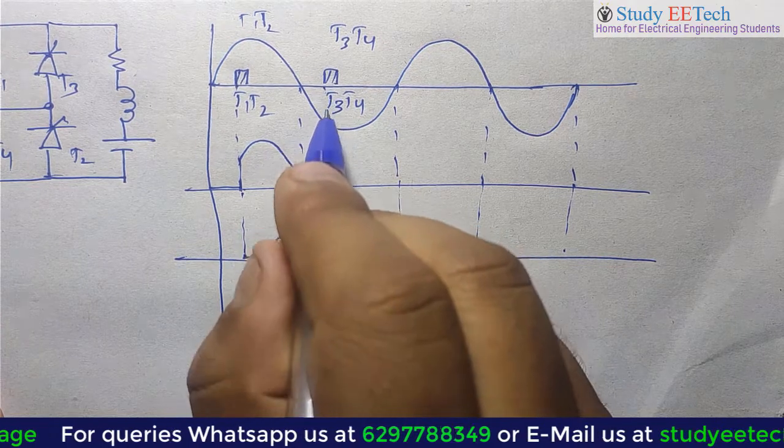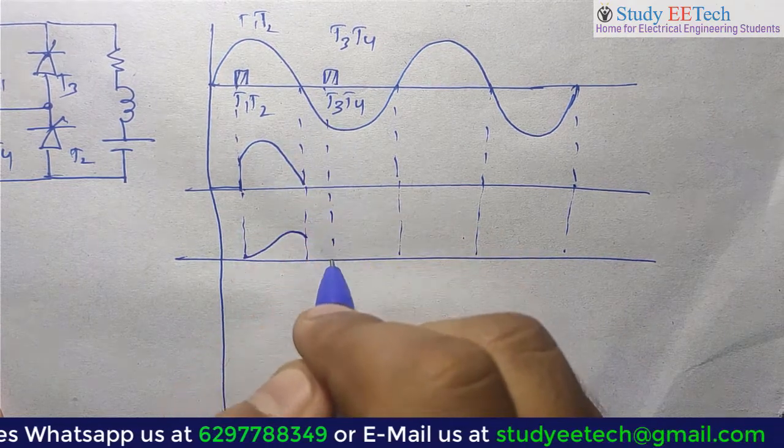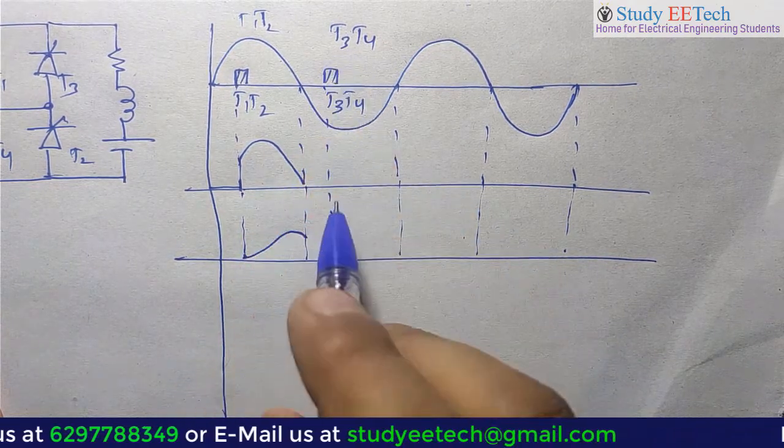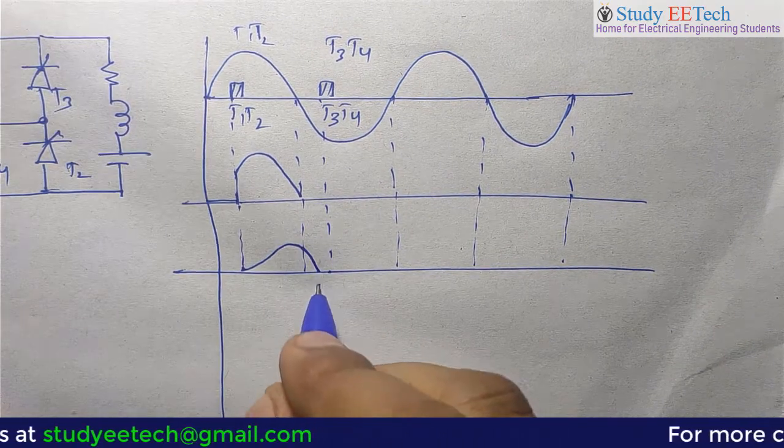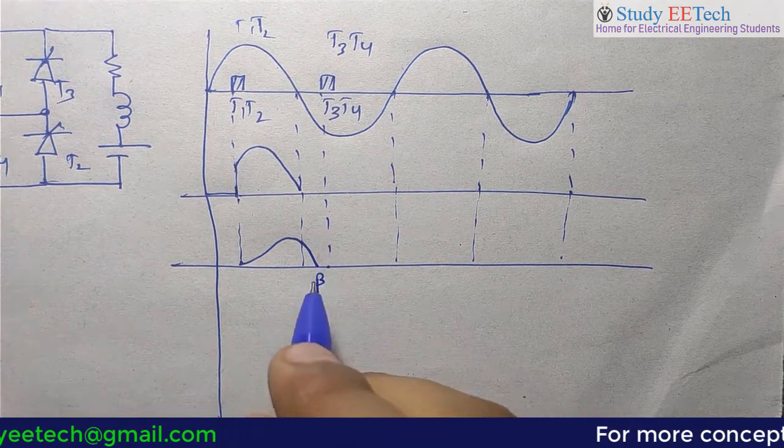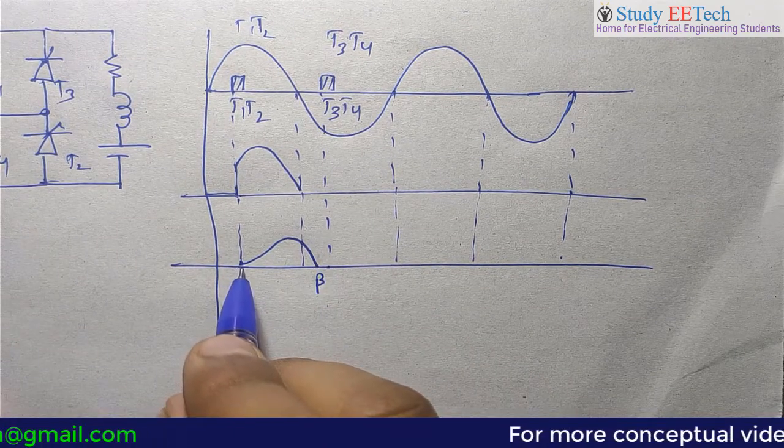We can assume before T1 and T2 is triggered, sorry T3, T4 is triggered, we can assume that current comes to zero where this point is called the extinction angle beta. This is alpha, the firing angle.